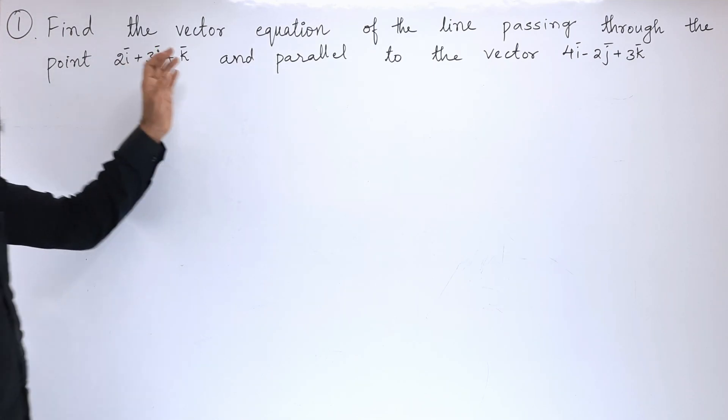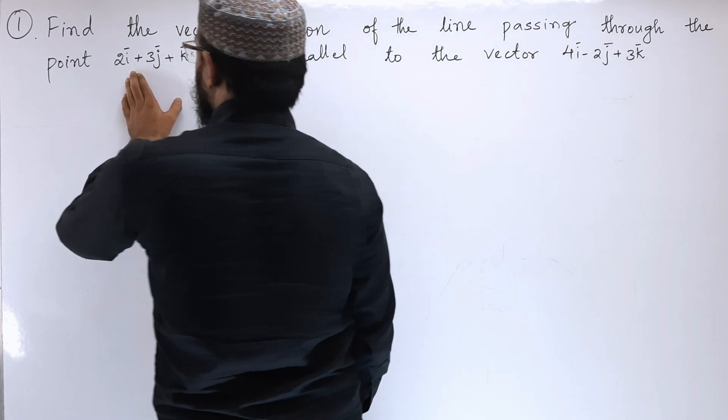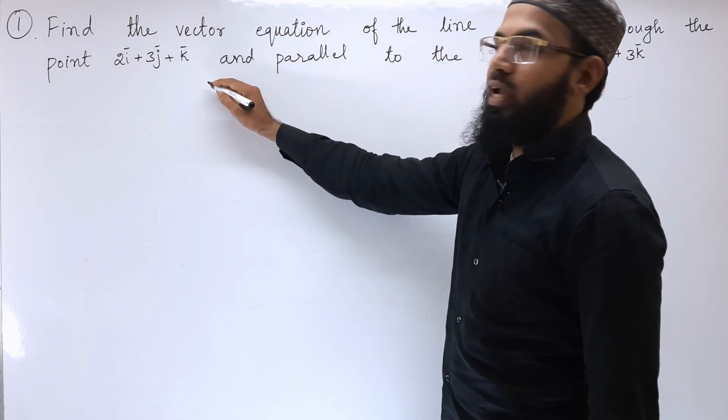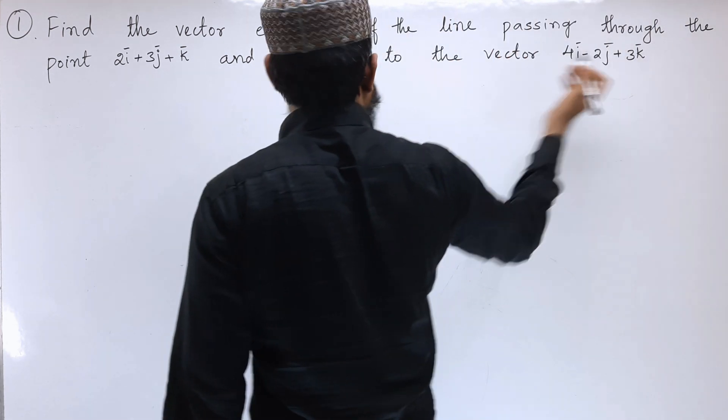First problem: find the vector equation of the line passing through the point 2i cap plus 3j cap plus k cap and parallel to the vector 4i cap minus 2j cap plus 3k cap.